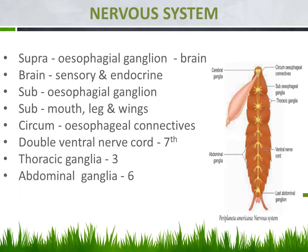Let us see what organs are involved in the nervous system of cockroach. The first one is the supraesophageal ganglion. The same part is located in the earthworm also — there we called it the suprapharyngeal ganglion. This ganglion is present above the esophagus.